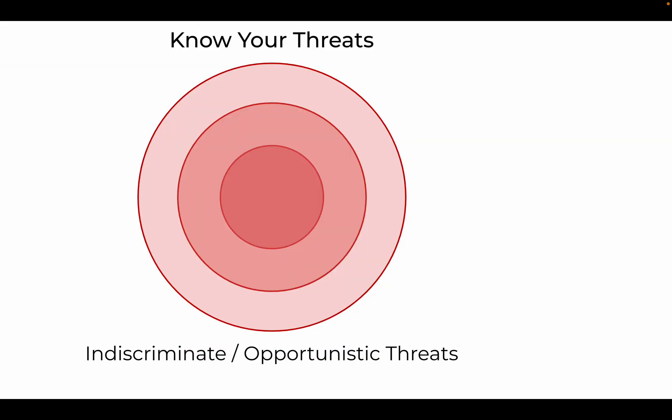The final and typically lowest-scored category involves opportunistic or indiscriminate threats — threats that may impact an organization despite or regardless of any specific targeting or intent. This category should not be discarded entirely. There is often a limited sample of public reporting on cyber threat activity, and a lack of reports involving your industry or peers should not automatically negate a particular threat from your model.